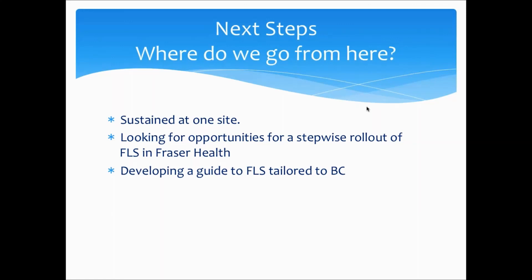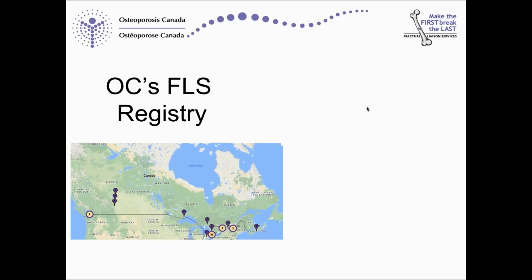So where are we going from here? We've sustained our FLS at one site and we're looking for opportunities for a stepwise rollout of FLS in our health authority. We're currently developing a guide to FLS tailored to British Columbia that will be available for anybody to use. Looking at the Osteoporosis Canada FLS registry, we have a very big country and the different FLS programs across the country are quite spread out. In British Columbia we only have two FLSs; there are three in Alberta, several — 26 at this time — in Ontario largely because of the Ontario Osteoporosis Strategy, and then a few across Quebec and the Maritimes.